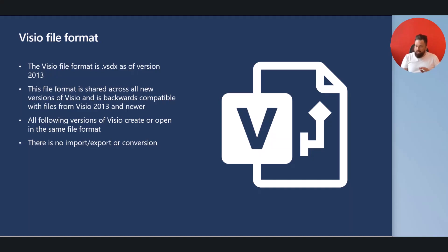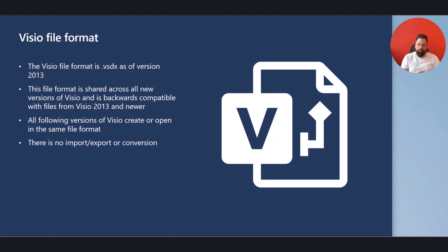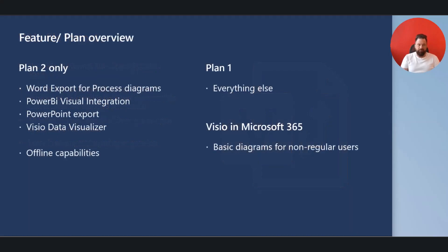There is one thing we don't need an overview for, and that is the Visio file format. It has not changed since version 2013 when the new XML-based file format was introduced. Whether you work with Plan 2 or Visio Standard 2013, you are always able to exchange files between all users — there is never an import, export, or conversion necessary. All Visio versions use the same file format.